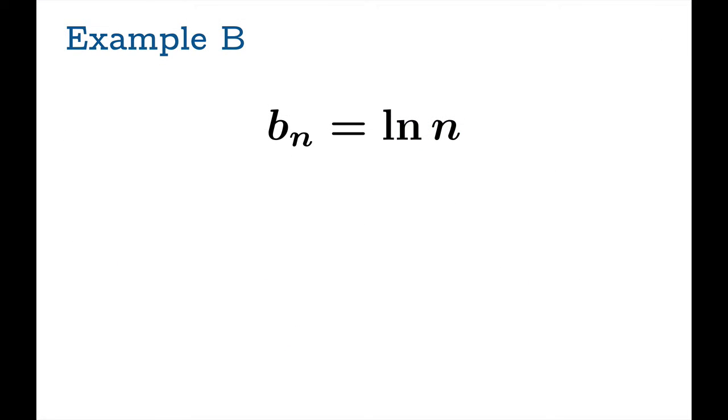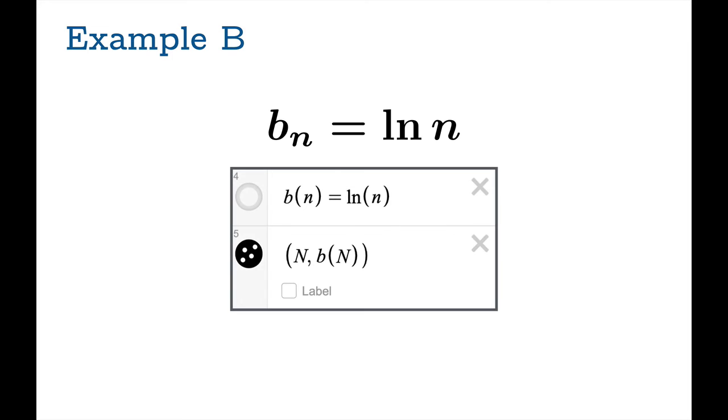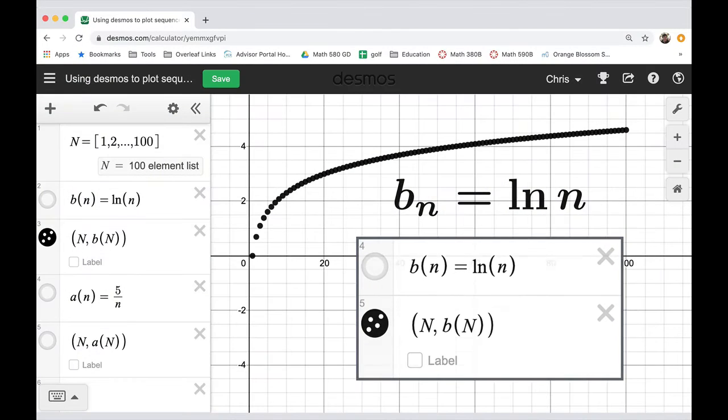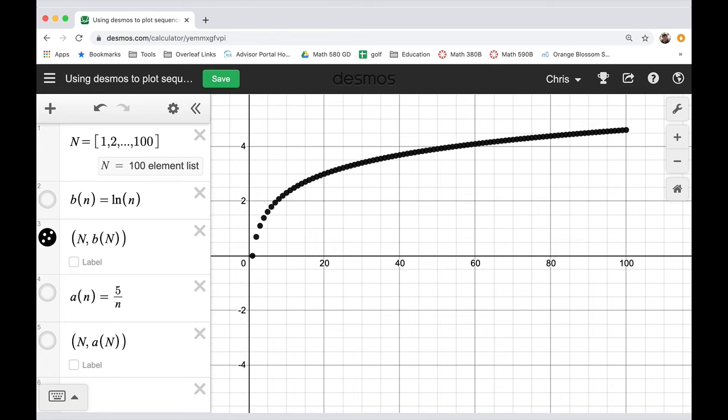All right, on to the logarithm sequence ln of n. Same game, nothing new here, so I'll just use a different variable and plot this. Here we go, we get this nice increasing sequence. It starts to level off, but we know that it actually grows without bound. We know this sequence actually diverges to infinity.